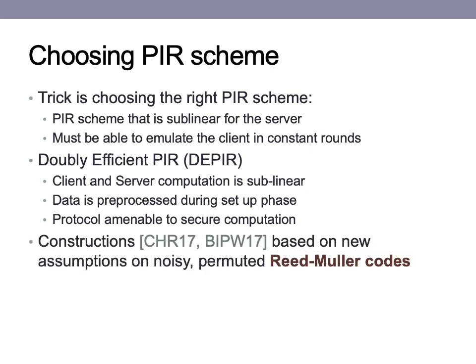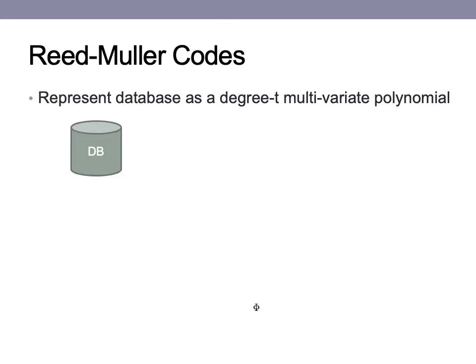The construction of dPIR, first introduced concurrently by Kennedy et al. and Boyle et al., is based on new assumptions on noisy permuted Reed-Muller codes. I want to take the rest of the talk to introduce some of the challenges we had when converting the dPIR client to a secure computation, and how we solved them by introducing a secure computation variant of fast Fourier transform protocols, which we believe is a contribution of independent interest. At a very high level, dPIR works using Reed-Muller codes, which are a family of locally decodable codes that represent the database as a polynomial.